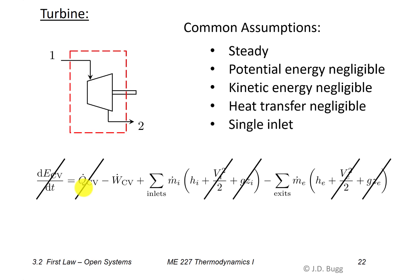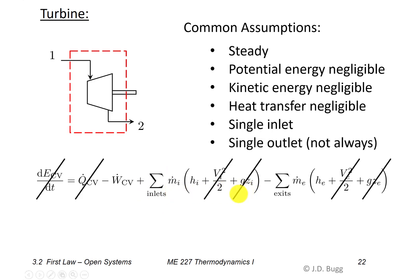Heat transfer is also assumed negligible. Though there can be some heat transfer from a turbine in certain situations, it is not one of the main energy transfers. Turbines are typically insulated to minimize heat exchange with surroundings, so the Q-dot term is set to zero. Additionally, we assume a single inlet and a single exit, consistent with our schematic. This removes the summation signs, though turbines with multiple outlets will be addressed later in the course.